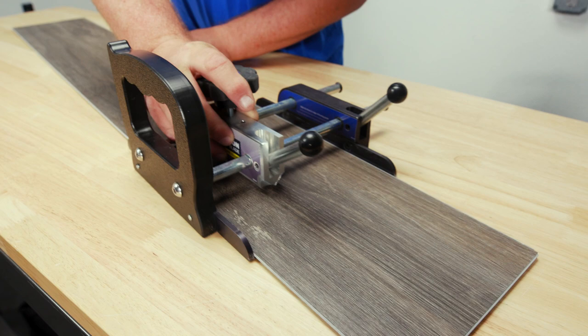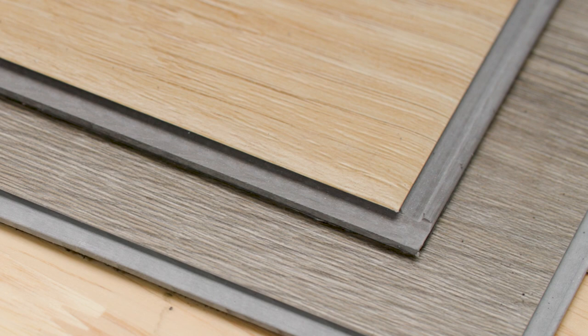Ripping vinyl planks is easy with the Vinyl Ripper from Marshalltown. The Vinyl Ripper rips flooring to widths by scoring the surface, allowing you to snap the flooring to size.